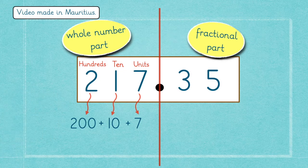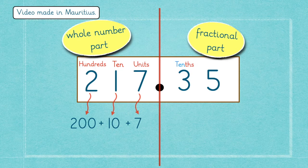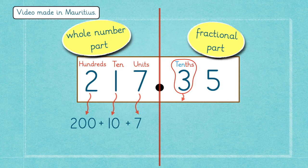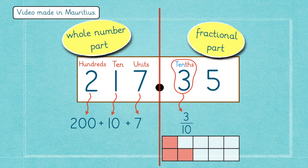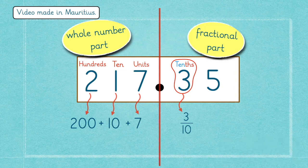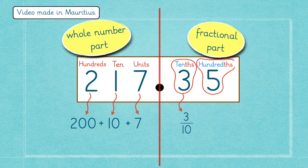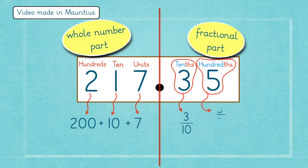Okay, we know that were the whole numbers, but if you look at the other side, the fractional part, you will notice that the 3 and the 5 are in fact fractions. As the 3 is in the 10th column, we call it 3 tenths. And since the 5 is in the 100th column, we call it 5 hundredths.